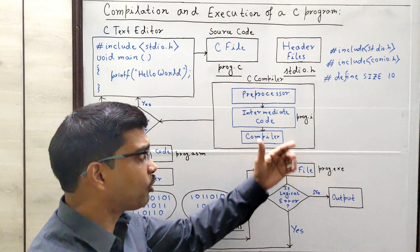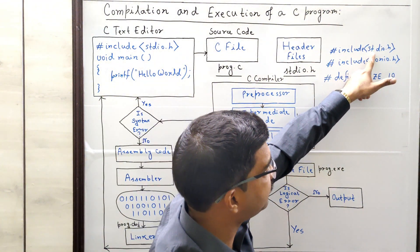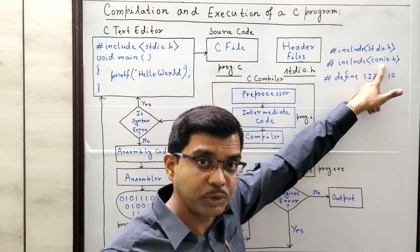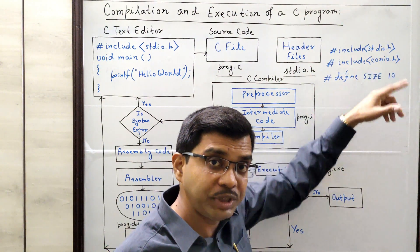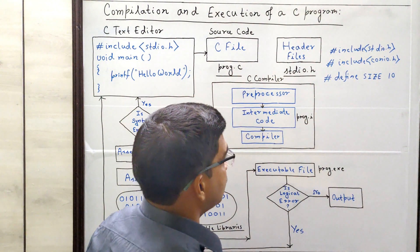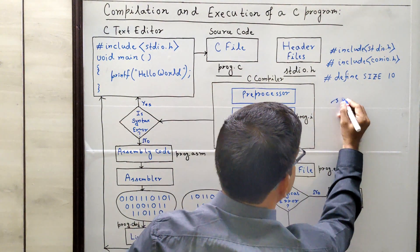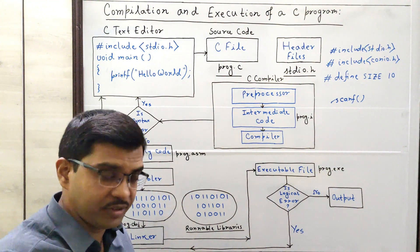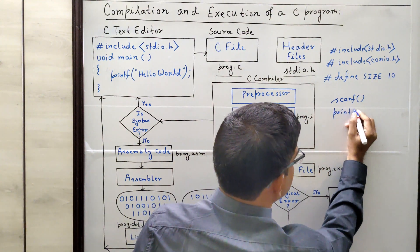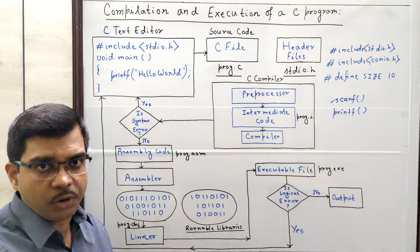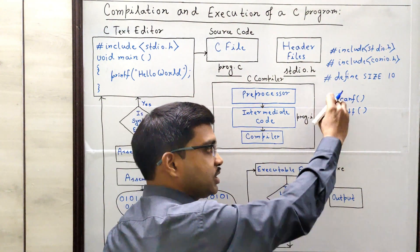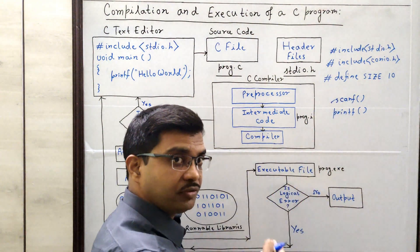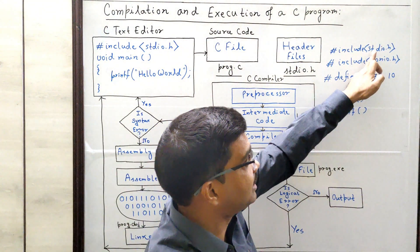Here we have included two header files: stdio.h, which is the standard input output header file, and conio.h, which is the console input output header file. We included these header files because we are going to use some standard input output functions in our program — for example, the scanf function, which is used to scan or read or take inputs in C programming, and the printf function, which is used to print any kind of information on the output screen. These are two system-defined functions, and their declarations have been included in these header files.